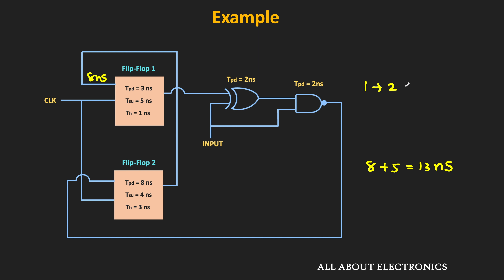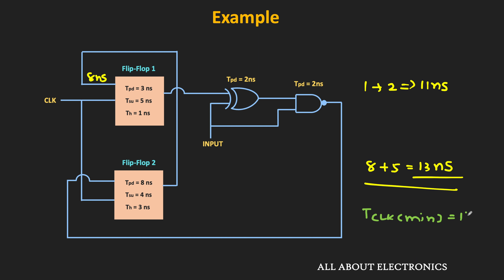We should consider the worst-case scenario, so we select 13 ns as the minimum clock duration. If we chose 11 ns, there would be a setup time violation for the first flip-flop, because from the second flip-flop to the first flip-flop the minimum required time is 13 ns. Therefore, we must choose 13 ns as the minimum clock duration. The maximum clock frequency F_clock_max is the inverse of 13 ns, which equals 76.9 MHz.